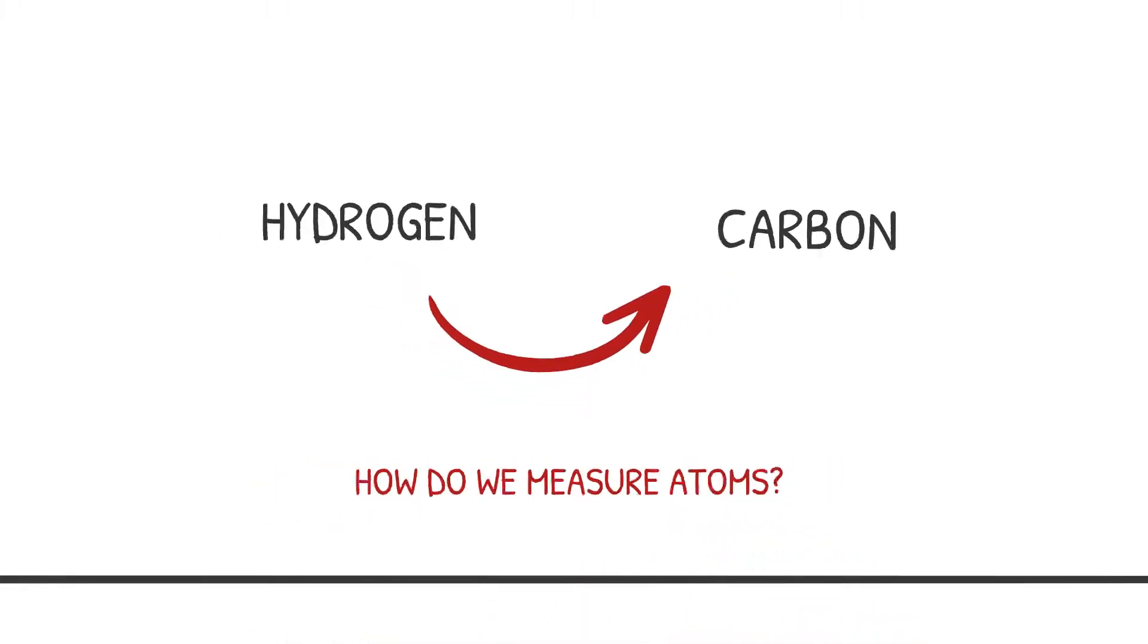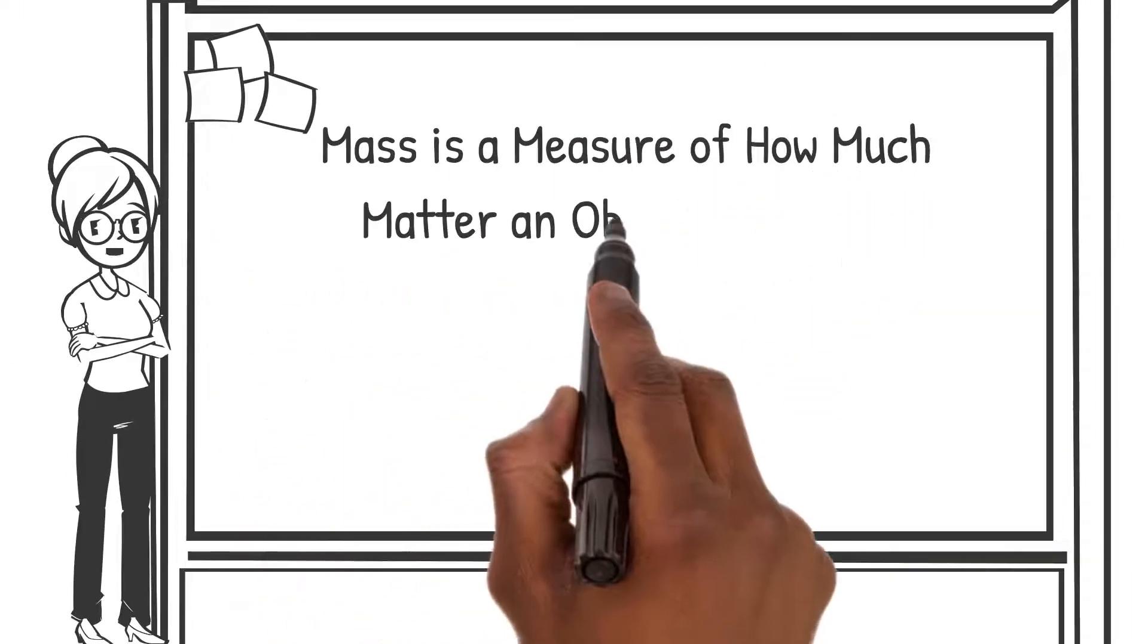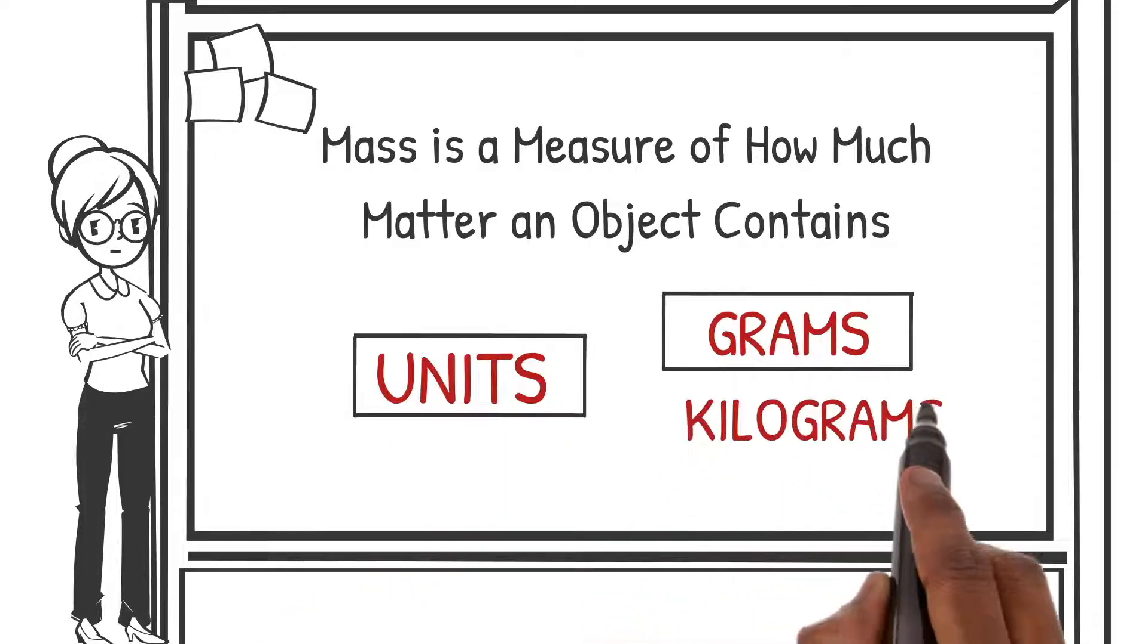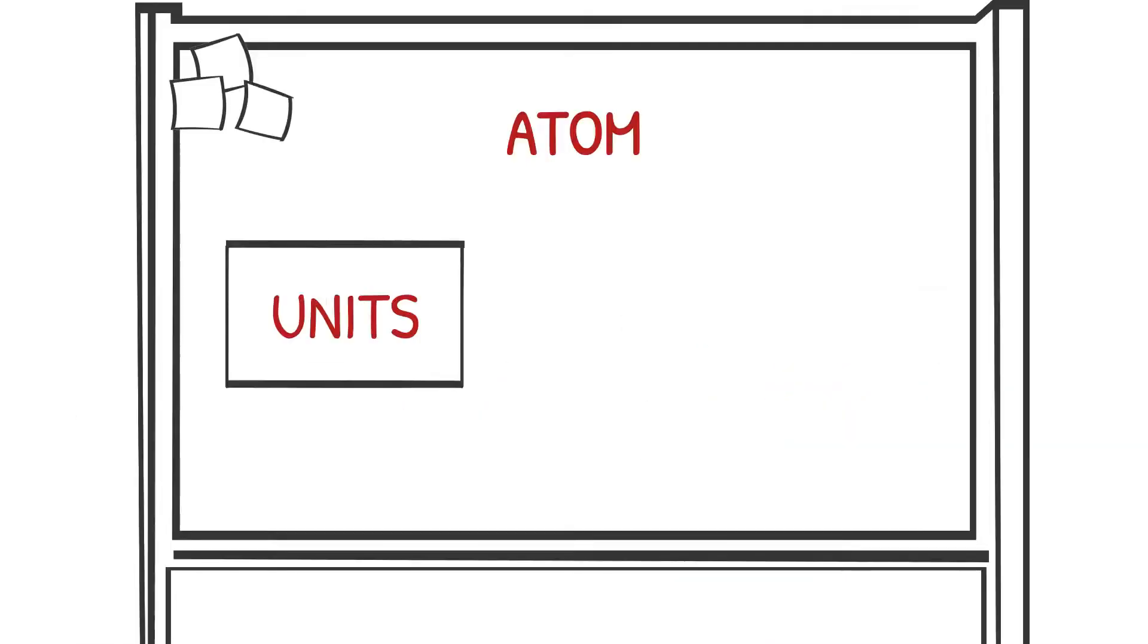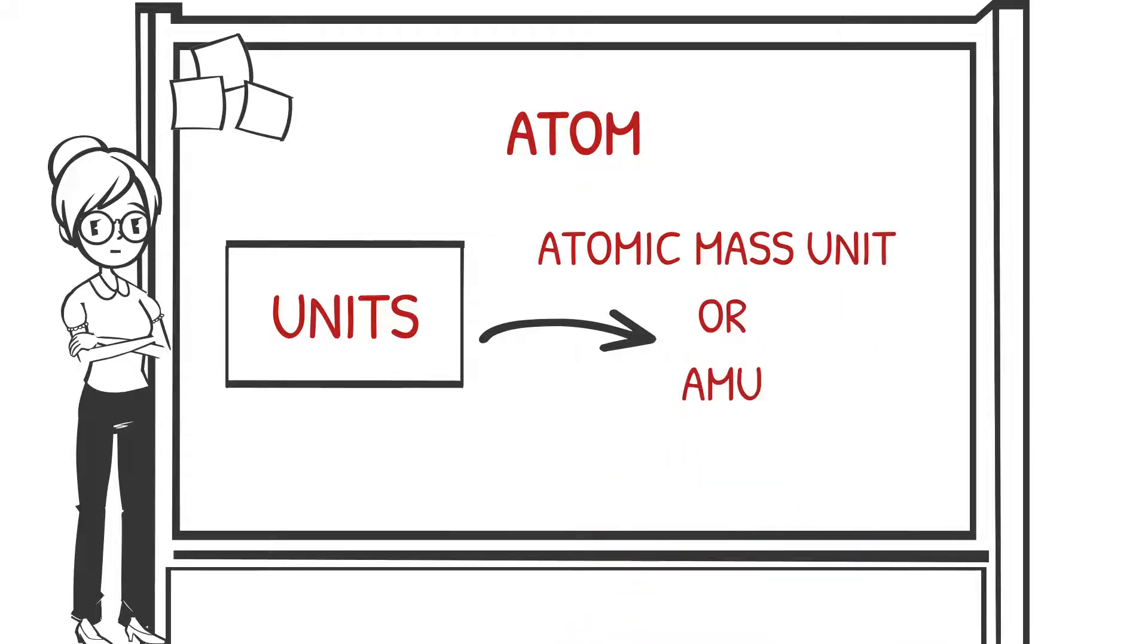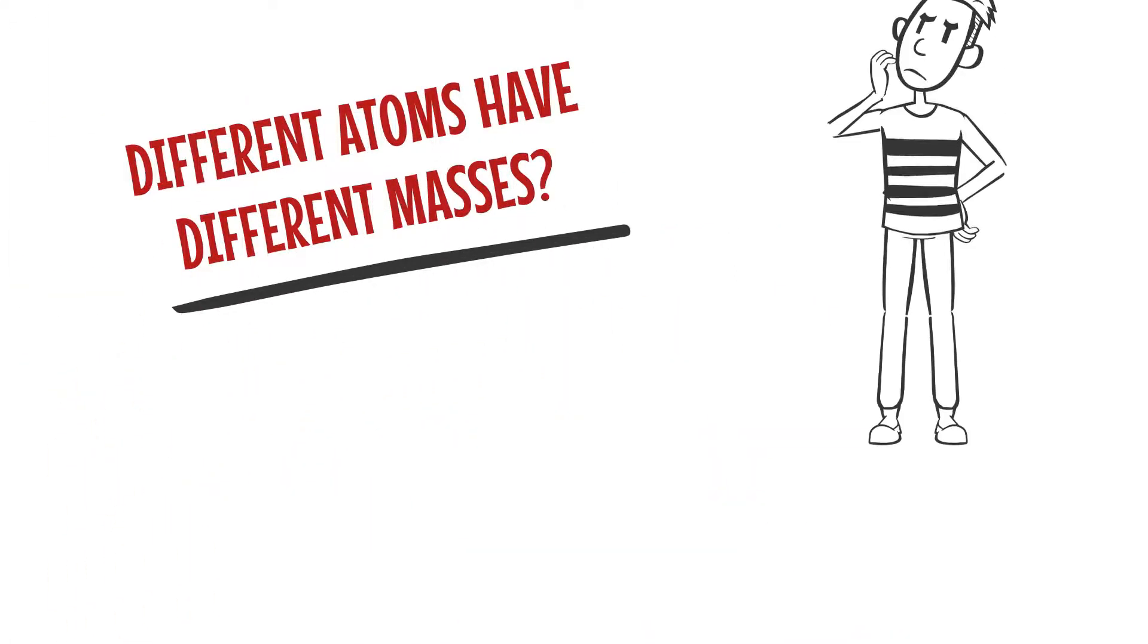But how do we measure atoms? That's where the concept of mass comes in. Mass is a measure of how much matter an object contains. We use units like grams or kilograms to measure mass, and when it comes to measuring atoms, we use a special unit called the atomic mass unit, or amu.